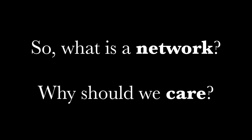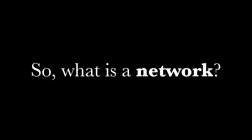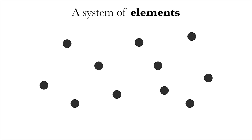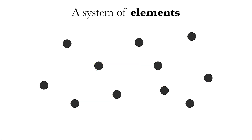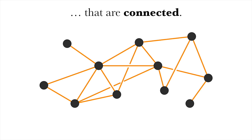So to study networks, we want to first know what is a network. A network is simply a system of elements that are connected. These elements are called nodes or vertices, and the connections are called links or edges.